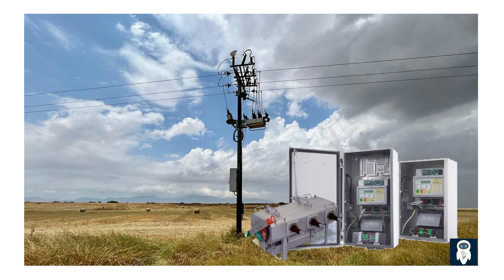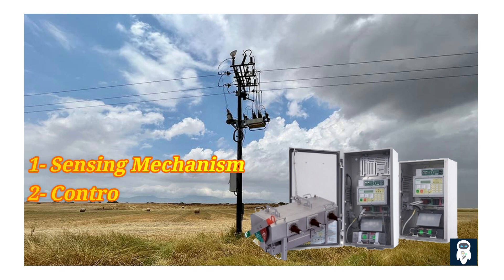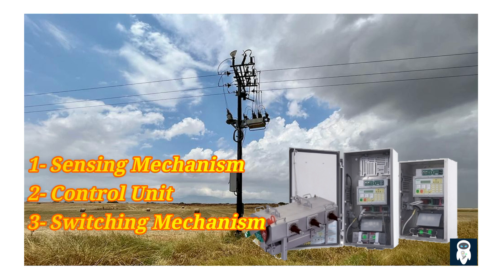The three key components are: 1. Sensing mechanism — this detects the presence of faults in the distribution line. 2. Control unit — this decides when to open the sectionalizer based on the fault conditions. 3. Switching mechanism — this physically opens the circuit to isolate the faulted section.